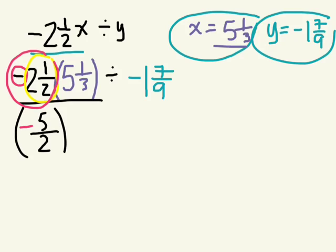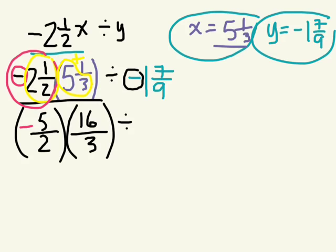Okay, so we're multiplying negative 5 over 2 times, how do I turn 5 and 1 third into an improper fraction? 5 times 3 plus 1, good. So we have 16 over 3 divided by, same thing. We know the answer will be a negative result, so we'll indicate that this is a negative number, but let's turn this part into an improper fraction. 9 times 1 plus 7, good. So it's negative 16 over 9. This negative tells me that the number, the value is negative.